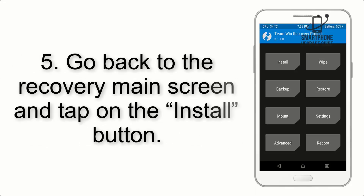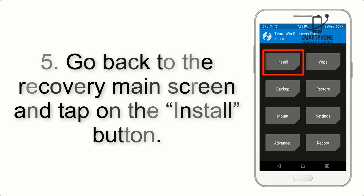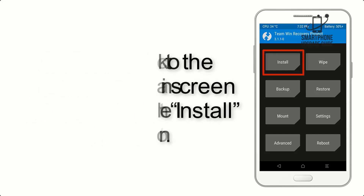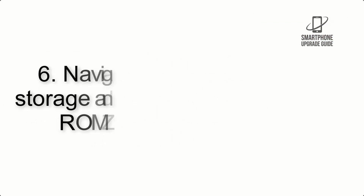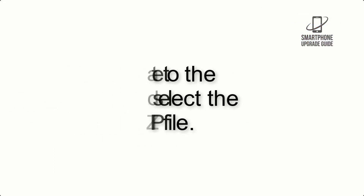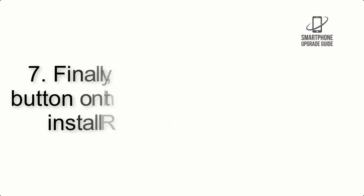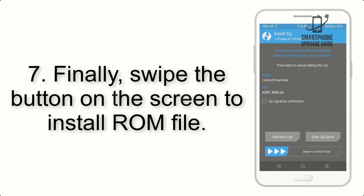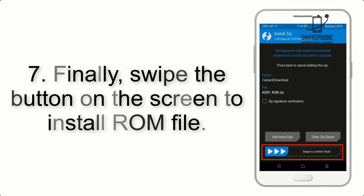Step 4: Swipe the button to wipe the device. Step 5: Go back to the recovery main screen and tap on the Install button. Step 6: Navigate to the storage and select the ROM zip file.